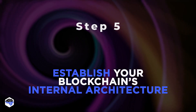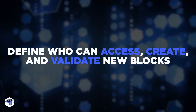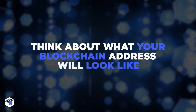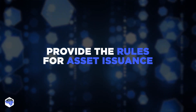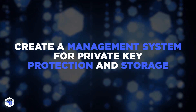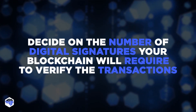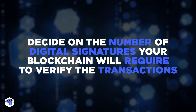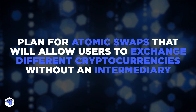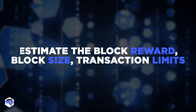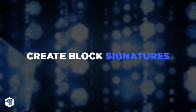Then, establish your blockchain's internal architecture. We advise making sure you make the best of your blockchain's internal architecture, because once the platform is launched, you won't be able to change the parameters. Define who can access, create, and validate new blocks. Think about what your blockchain address will look like, choose the format of the keys, provide the rules for asset issuance, create a management system for private key protection and storage, and decide on the number of digital signatures your blockchain will require to verify transactions. Plan for atomic swaps that will allow users to exchange different cryptocurrencies without an intermediary. Estimate the block reward, block size, transaction limits, and create block signatures.